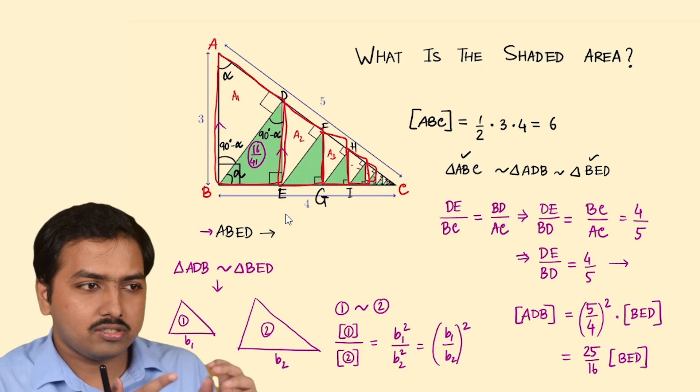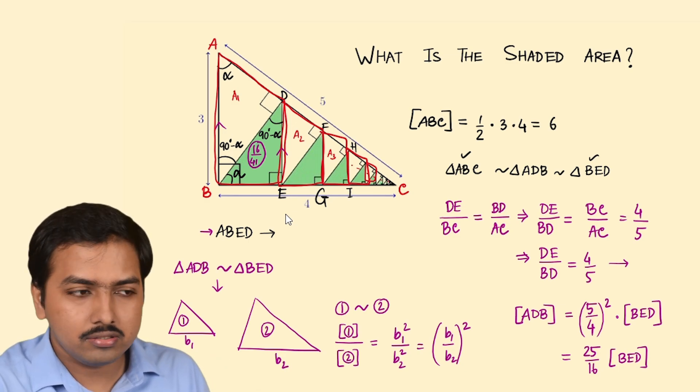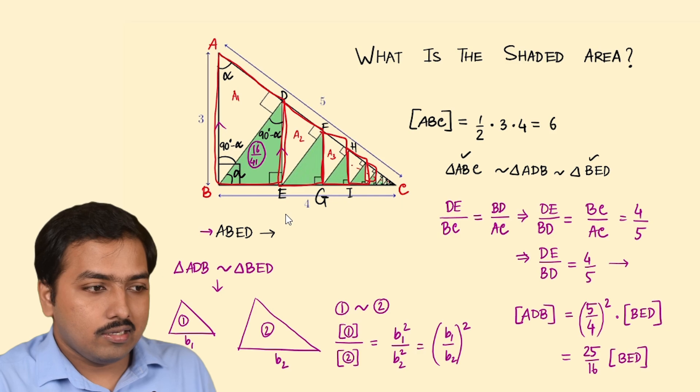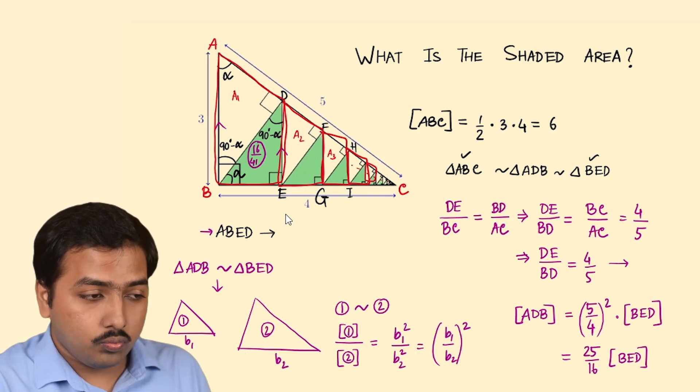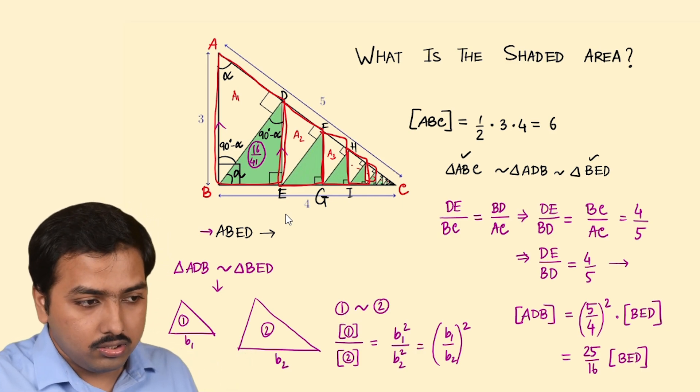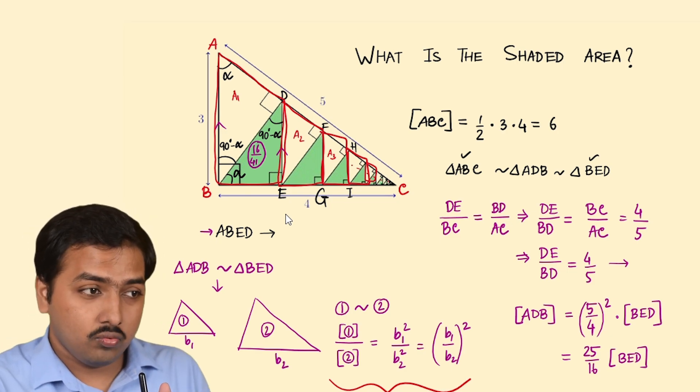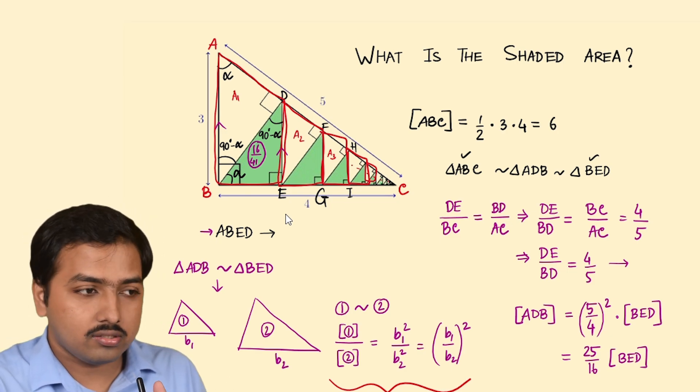So I hope you enjoyed the solution here because in this case we used a lot of the geometrical results. For example, the similar triangles, the right angle triangles, the homothety most importantly, the result, one of the crucial results using from the similar triangles, which is this. You should remember this one, it's one of the most efficient results.